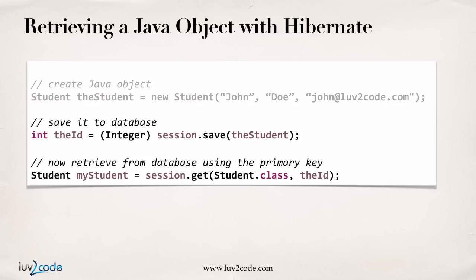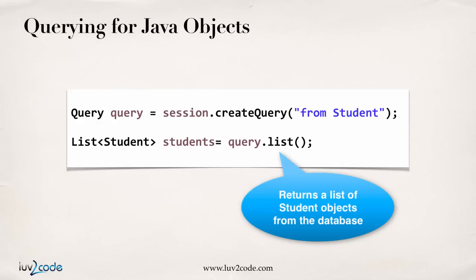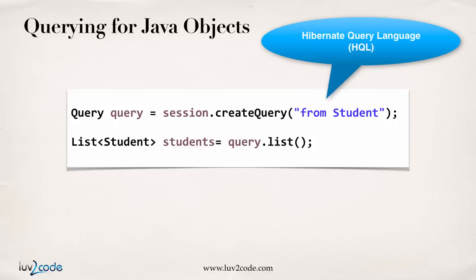What about the scenario where you want all of the student objects, not just one? You want to query and get a list of all of them. Hibernate has support for queries. Here I say session.createQuery and say 'from Student', which will give you a list of all student objects. Then I call query.list, which queries the database, gets all objects from the student table, and returns them as a list of student objects. Notice we didn't have to do any low-level SQL for a select query. We created this very basic query using something called the Hibernate Query Language. We'll talk about this in more detail in later videos, but at a high level it queries and gives you all the students from the database. You can also set up where clauses and so on, which we'll cover later.